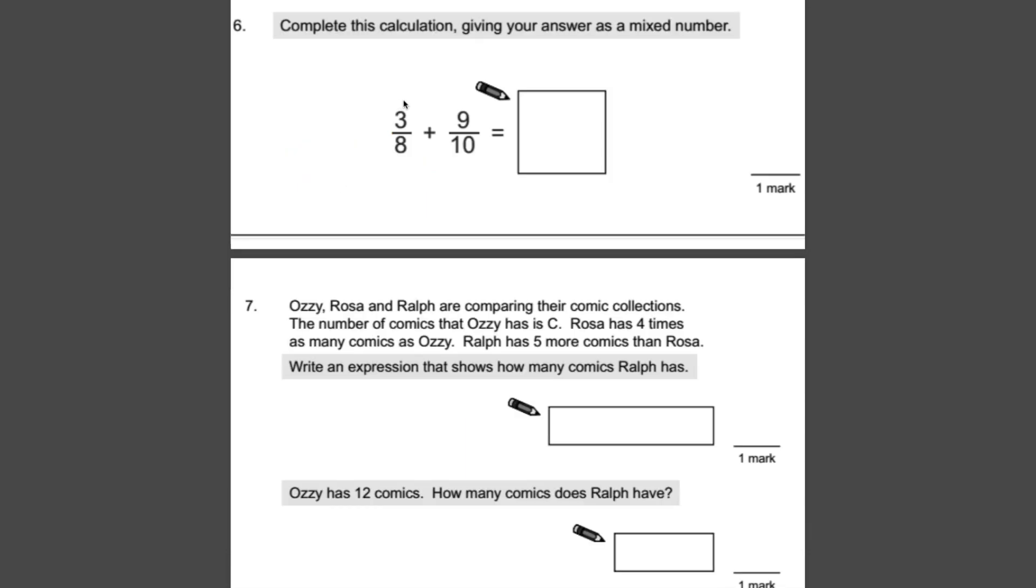Number six. Complete this calculation, giving your answer as a mixed number. First things first. If we look at the fraction we've got here, we can't add these two together because they have different denominators. So what we need to do is convert them so they have the same denominator. So what we need to do is look and say, right, well, what's in the eight times table that's also in the ten times table? And a quick way of doing that is timesing them together.